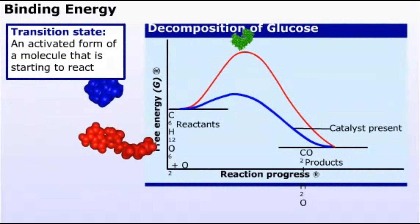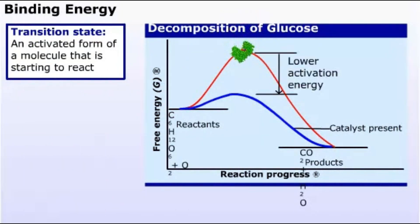When an enzyme binds a substrate, energy is released. The binding energy lowers the activation energy. Because the hill is lower, the reaction occurs more quickly.